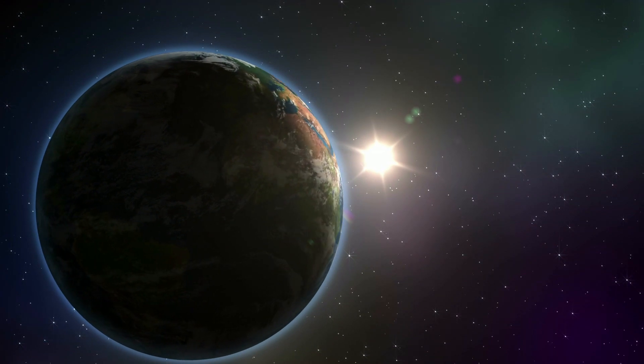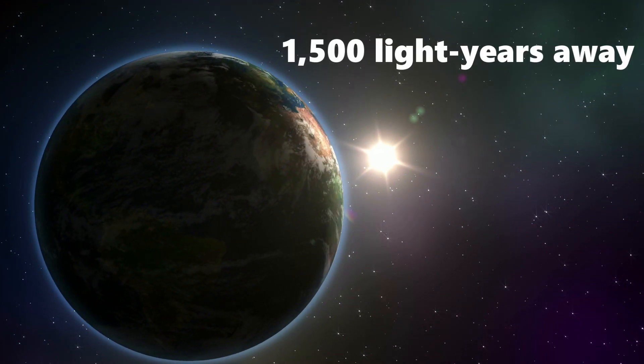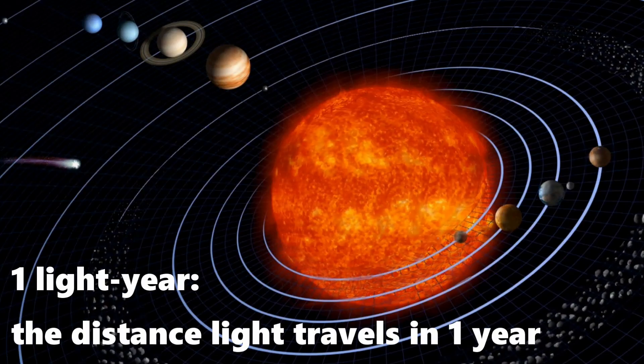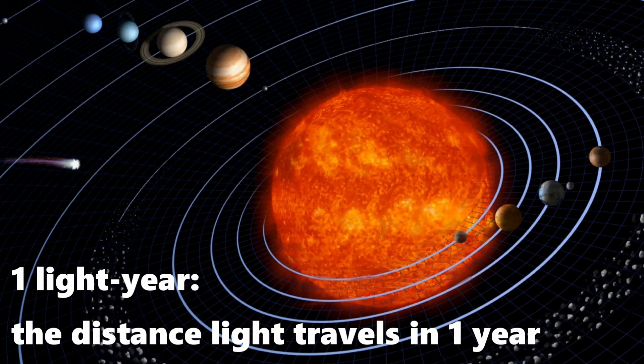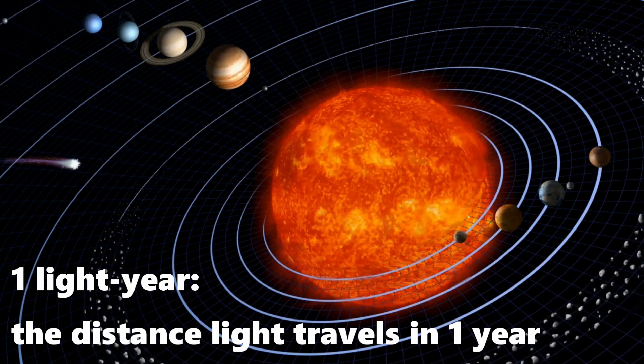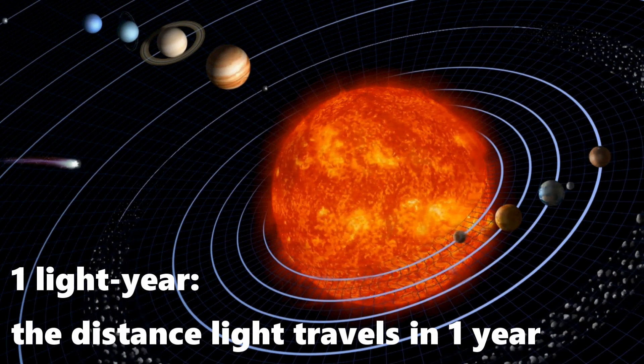Now, black holes might seem super scary after everything we've seen so far, but there's really no need to worry. The nearest one to Earth is about 1,500 light years away. One light year is the distance that light travels in one year, so we are definitely safe.